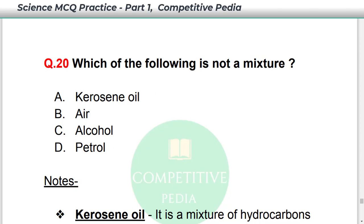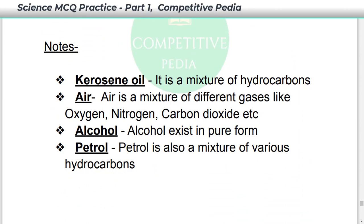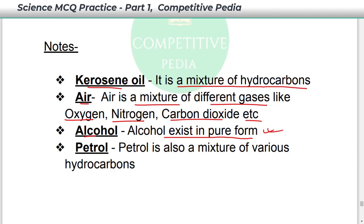Which of the following is not a mixture? The answer is alcohol — option C. Kerosene oil is a mixture of hydrocarbons. Air is a mixture of different gases like oxygen, nitrogen, and carbon dioxide. Alcohol exists in pure form, so it is not a mixture. Petrol is also a mixture of various hydrocarbons.